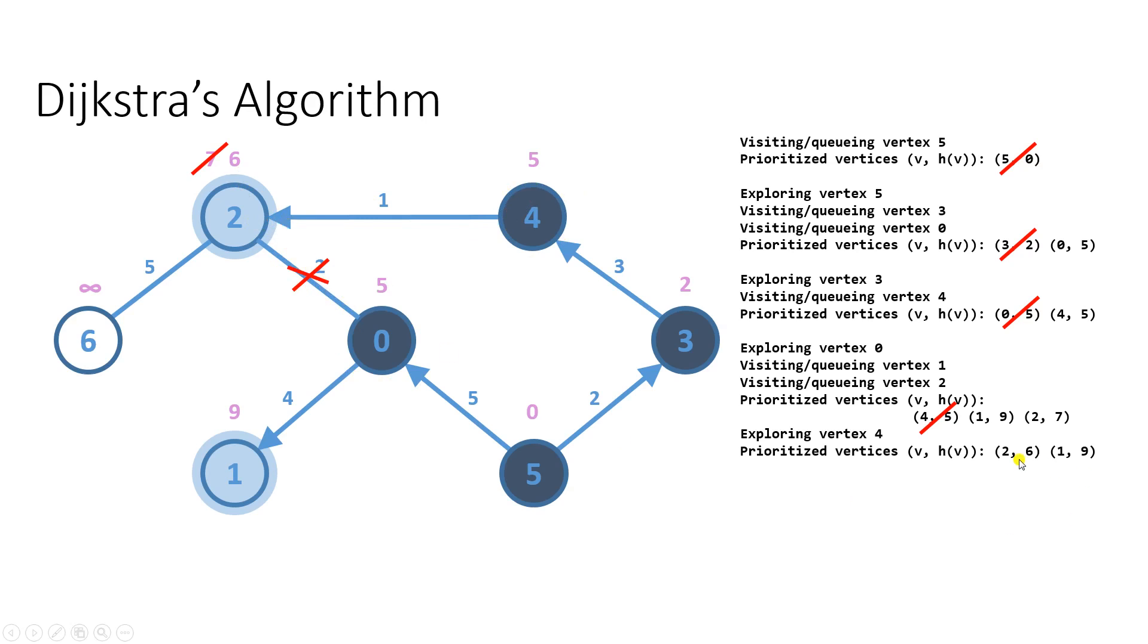The next vertex to explore is vertex number 2, so when we do that, we will also visit vertex number 6 and calculate its total cost, which is 11, and we will put it to the priority queue.